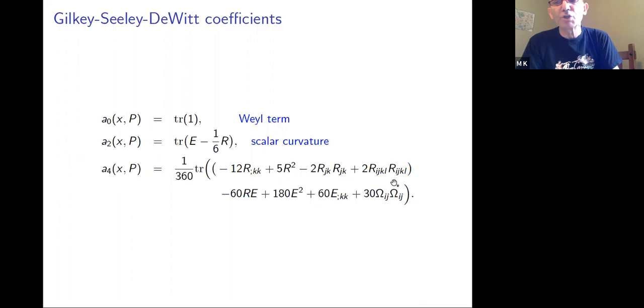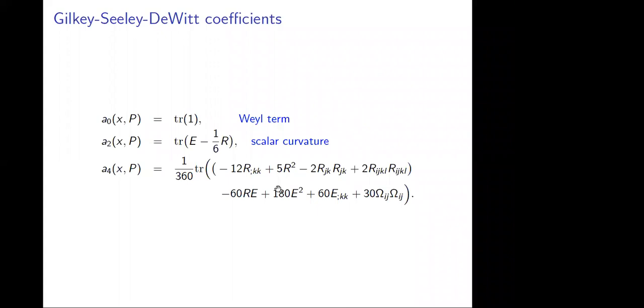There is a formula also for A_4, which in the noncommutative case we don't know how to use at all. This is one of the mysteries because everything here is kind of missing.